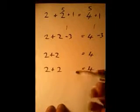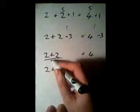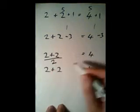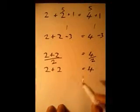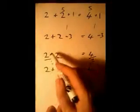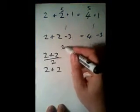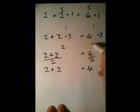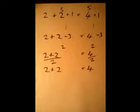As you can imagine, we're going to do this with division too — divide both sides by 2. So 4 divided by 2 is 2, and 4 divided by 2 is 2. Again the equation still holds true.